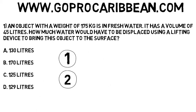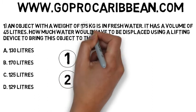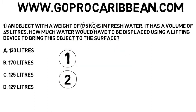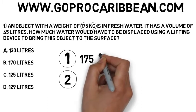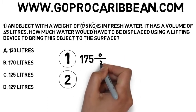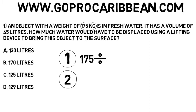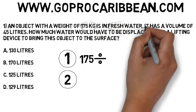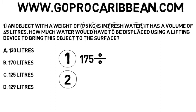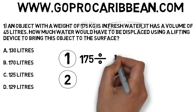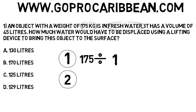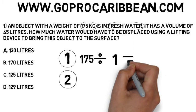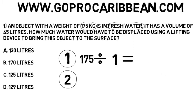The first thing we look at in a lift bag question is the weight of the object — it's 175 kilograms. We can fill that in. We now look at the type of water it's in. We need to divide by the constant for that type of water. In this case it's fresh water, so one. We are dividing by one. It's a fairly pointless step, but it's methodical — it's the right way to do things. So 175 divided by one is 175.